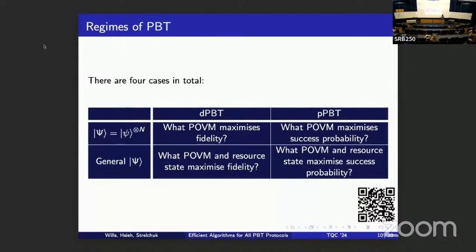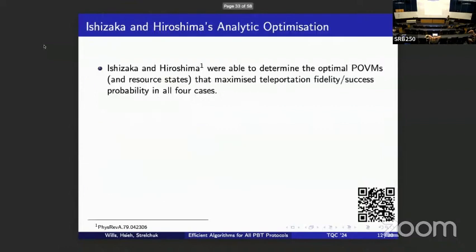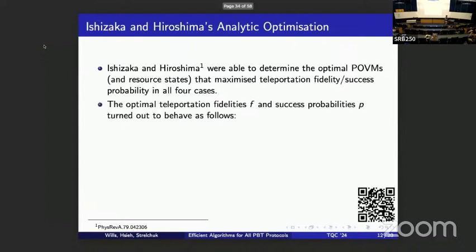In the columns you choose either deterministic or probabilistic: optimize the teleportation fidelity with success probability equal to one, or maximize success probability conditioned on perfect teleportation when we succeed. In the rows: the top row optimizes only the POVM, and the second row performs a joint optimization of the POVM and the resource state. Ishizaka and Hiroshima were able to solve these optimization problems analytically, which is quite astonishing and a very impressive paper.